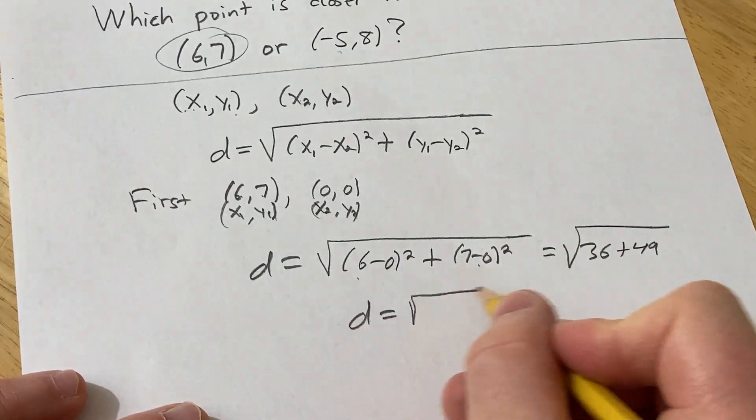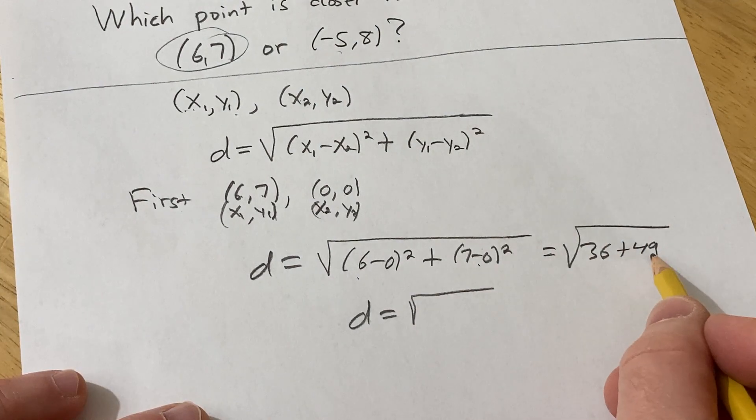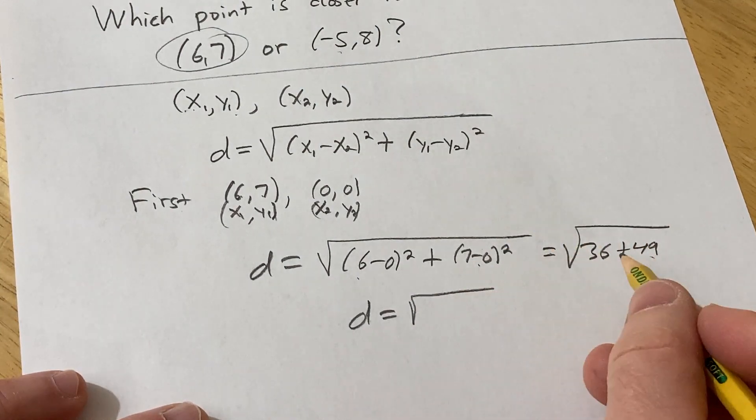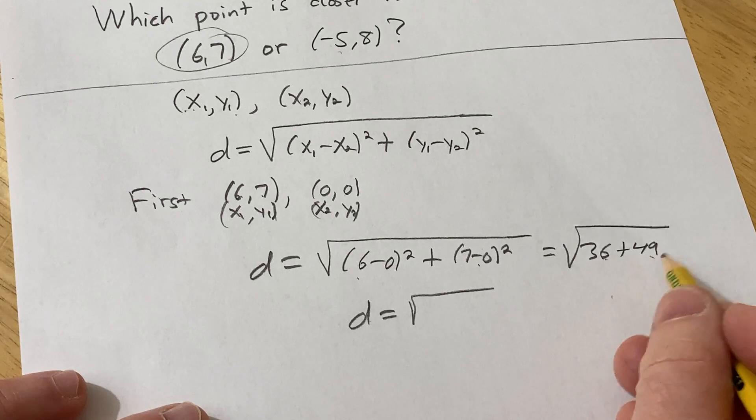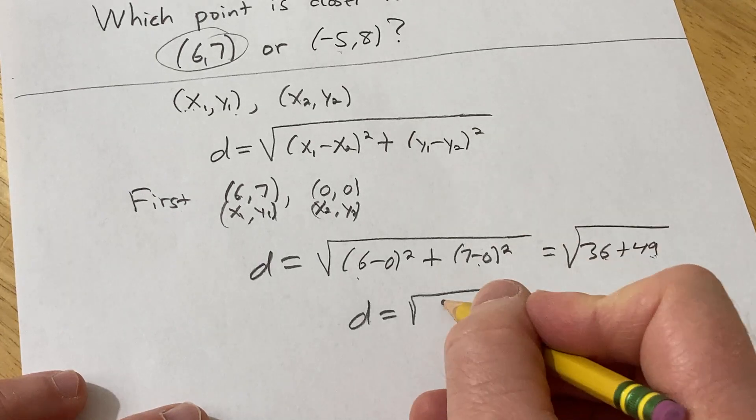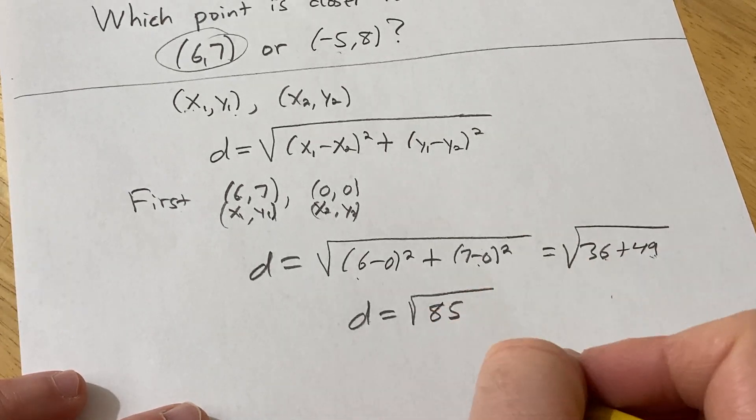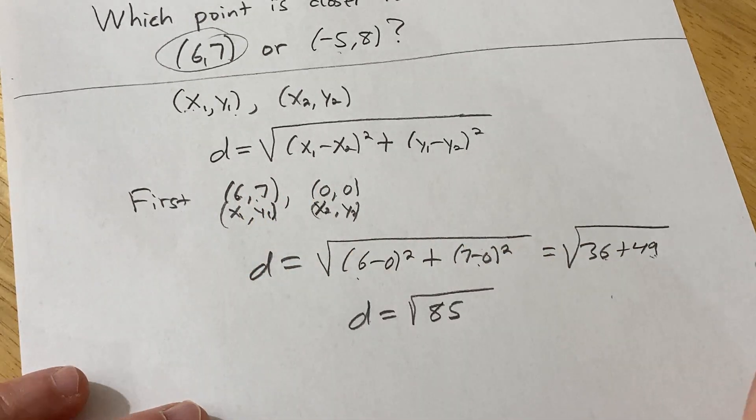So d is equal to the square root of, so let's see, 36 plus 49, that's going to be 85, because 6 plus 49 is 55, plus 30 is 85. So that's the distance between 6, 7, and 0, 0.